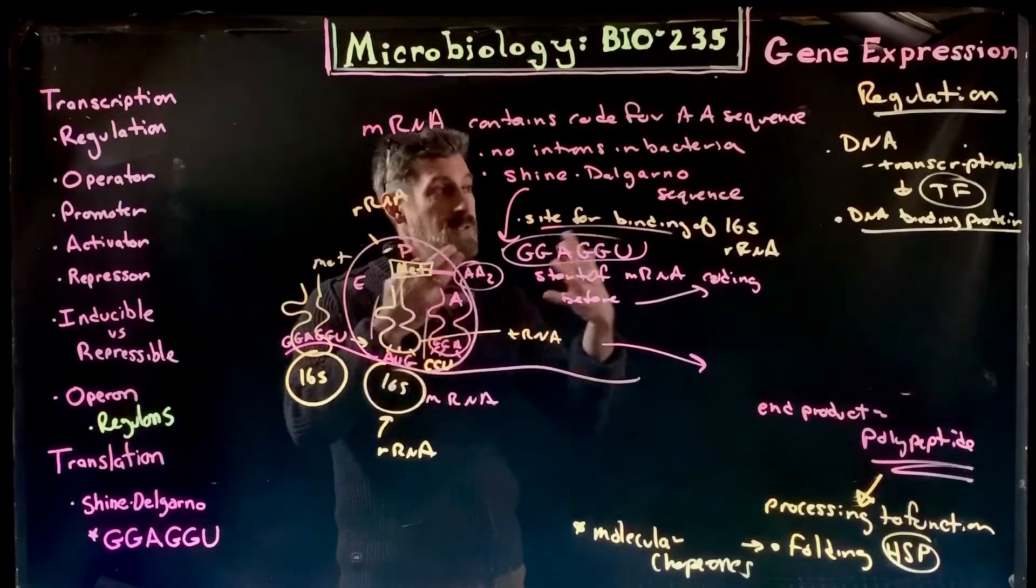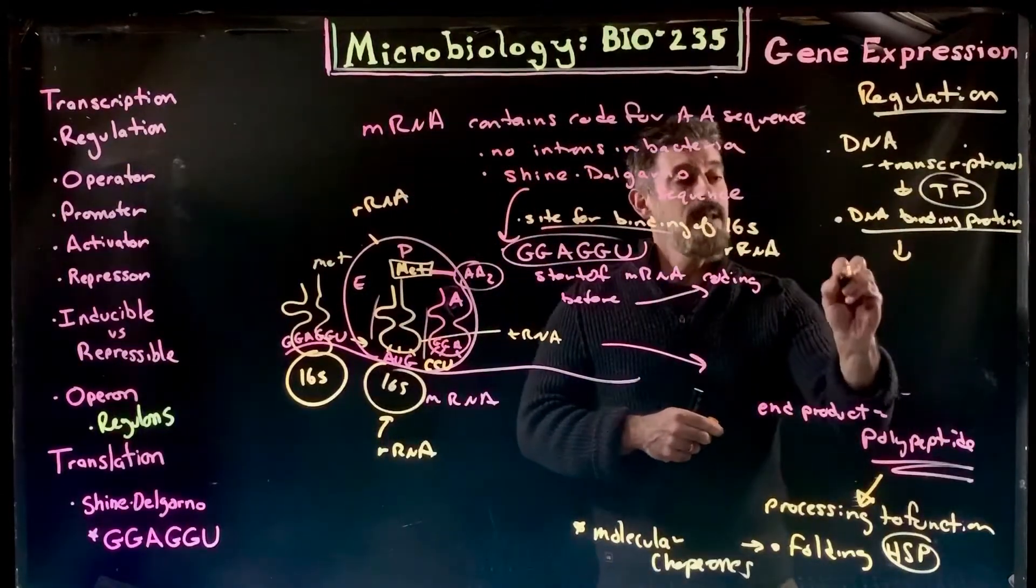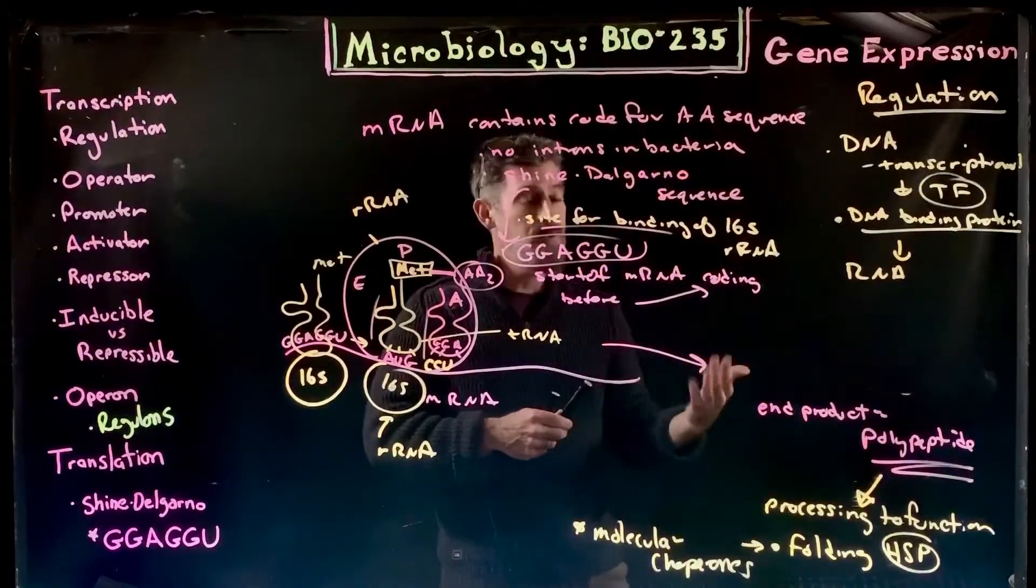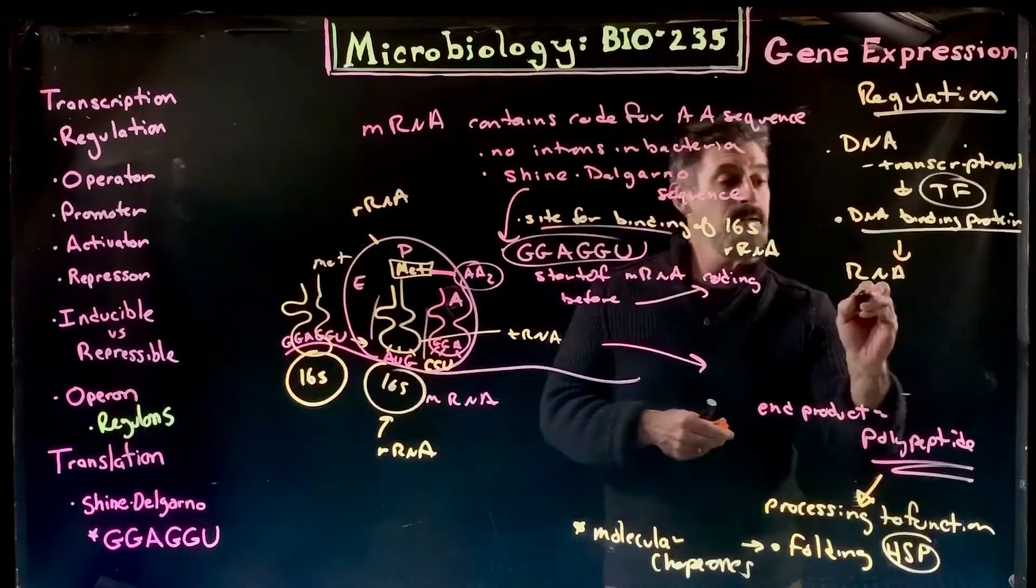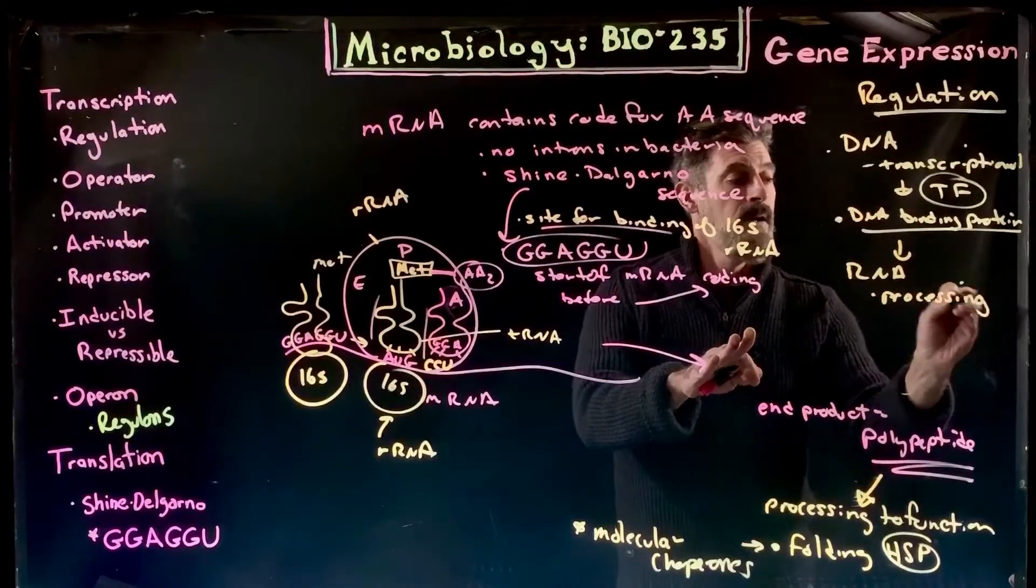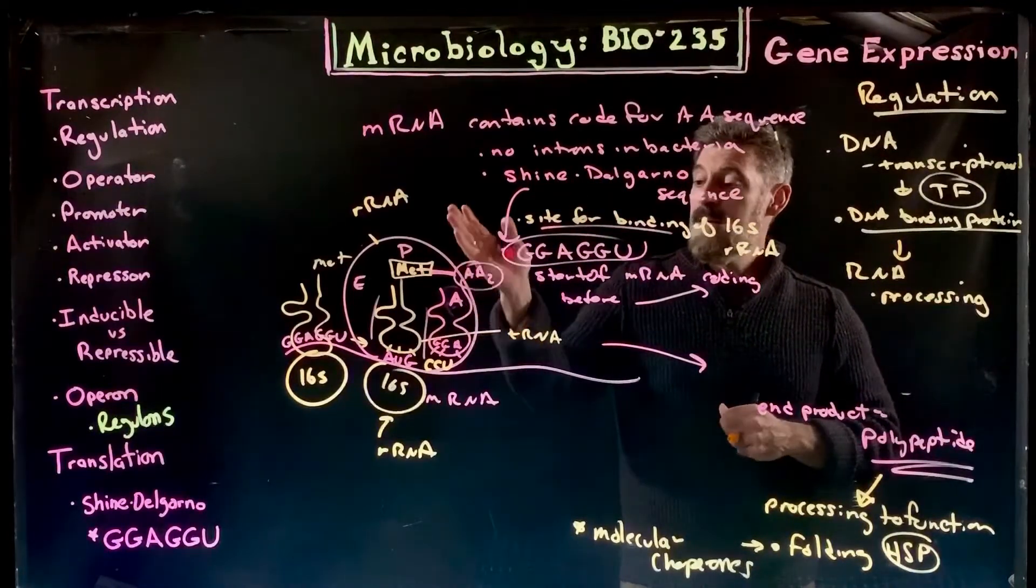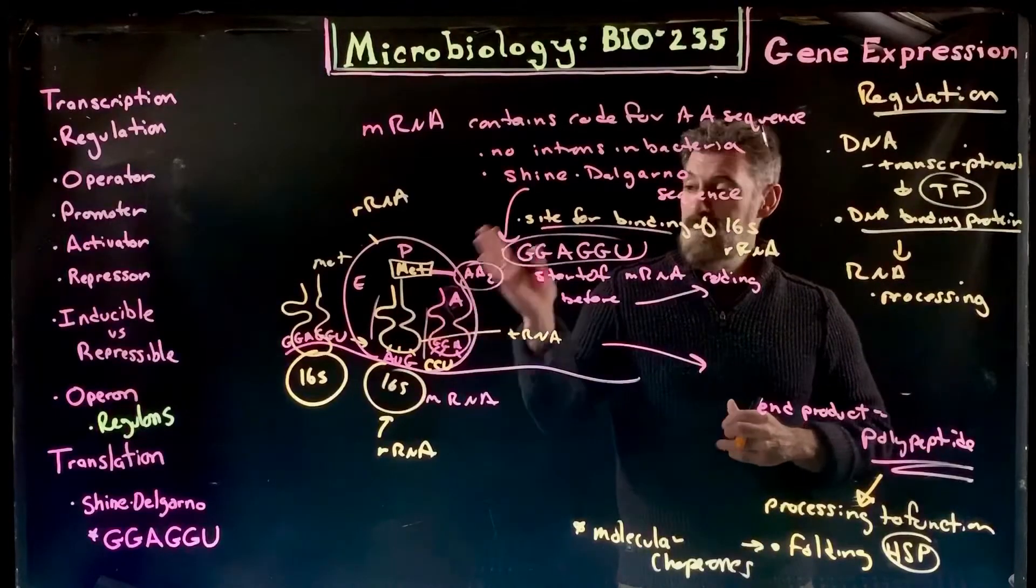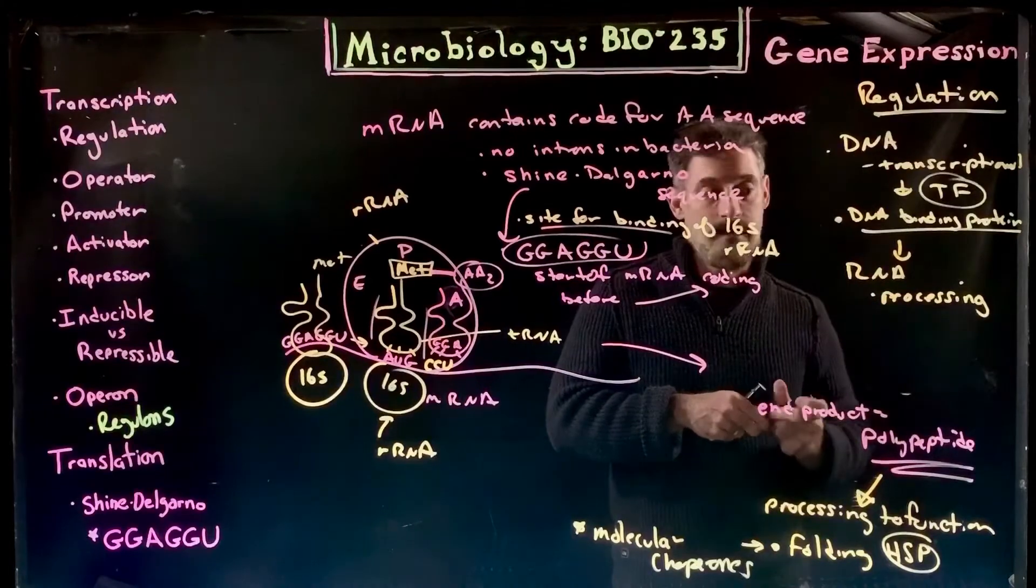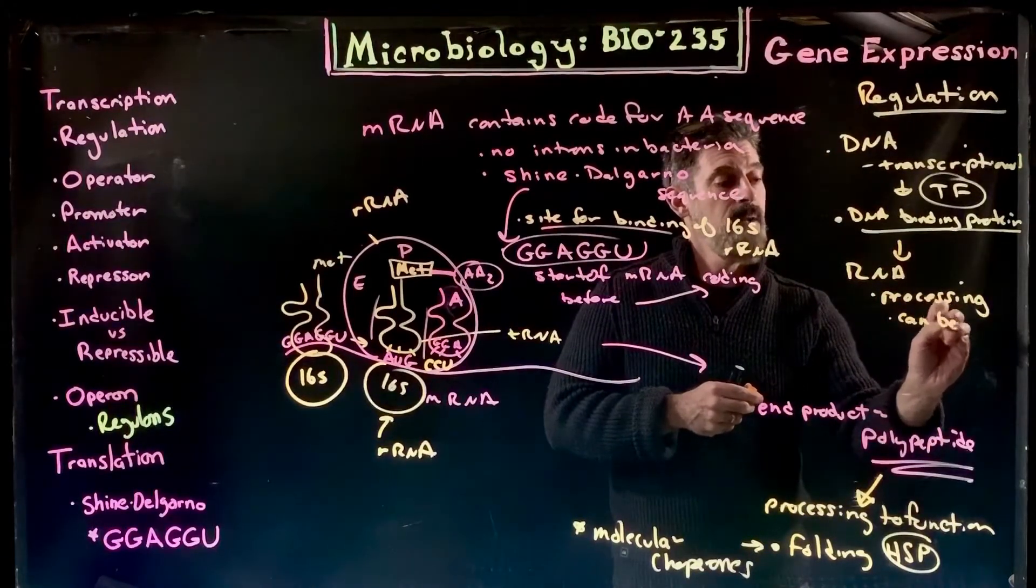Once we get the RNA, let's say we get transcription—it's not over with. It's not a done deal that it was copied so now it's over. The RNA still requires its own processing. You have to actually bind the amino acids to the transfer RNAs, the messenger RNA has to be modified, the ribosome has to be assembled. Those processes can be stopped or blocked as well.